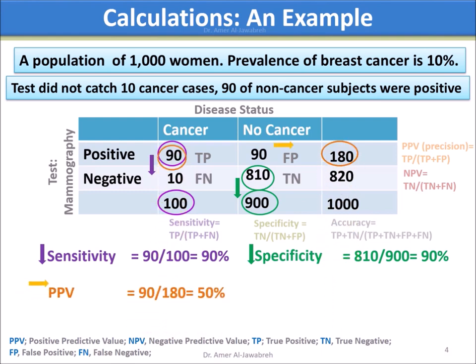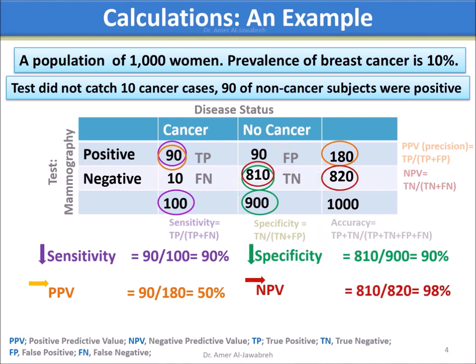The predictive values are looked at horizontally: the test-positive row for PPV, which is 90 over 180; and the test-negative row for NPV, which is 810 over 820. Finally, for accuracy, take the total of the true results over the grand total of the sample population, which is 90 plus 810 over 1,000.